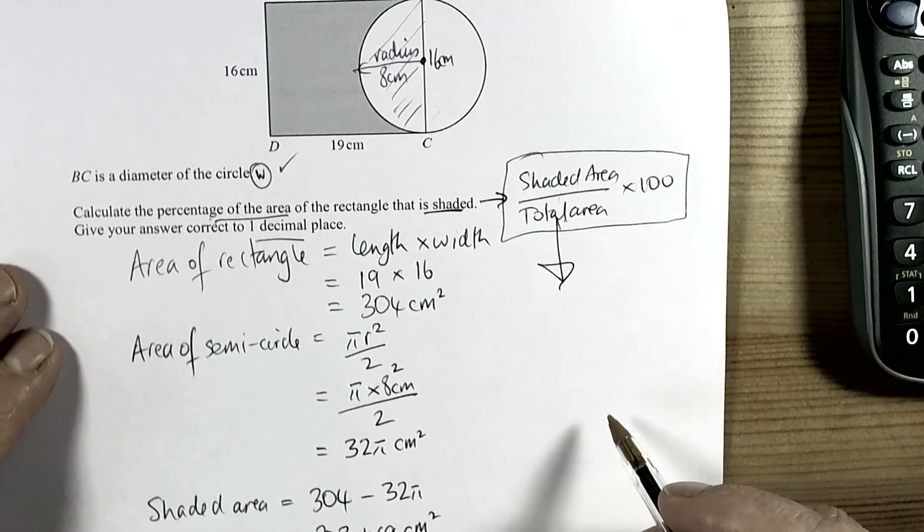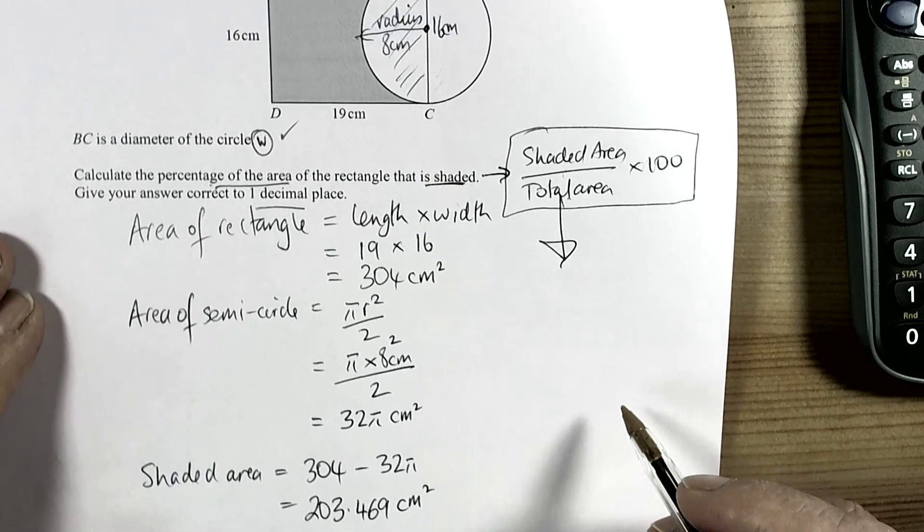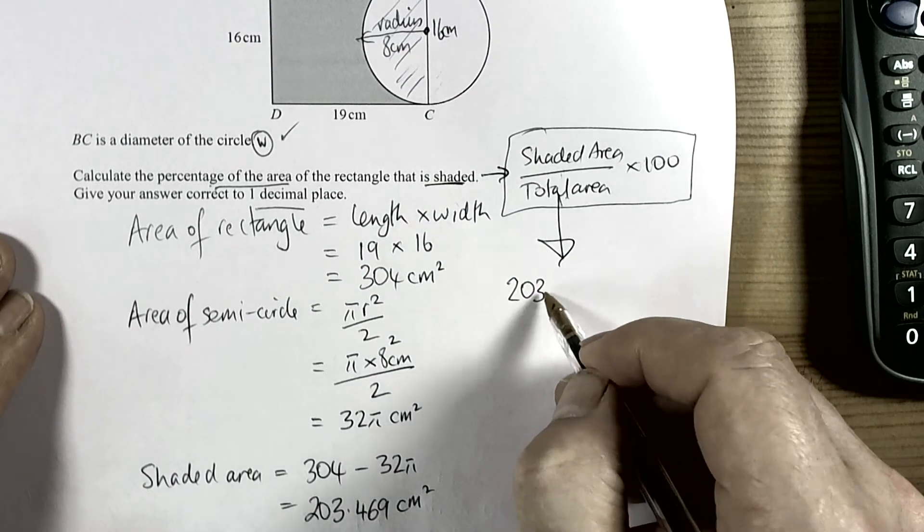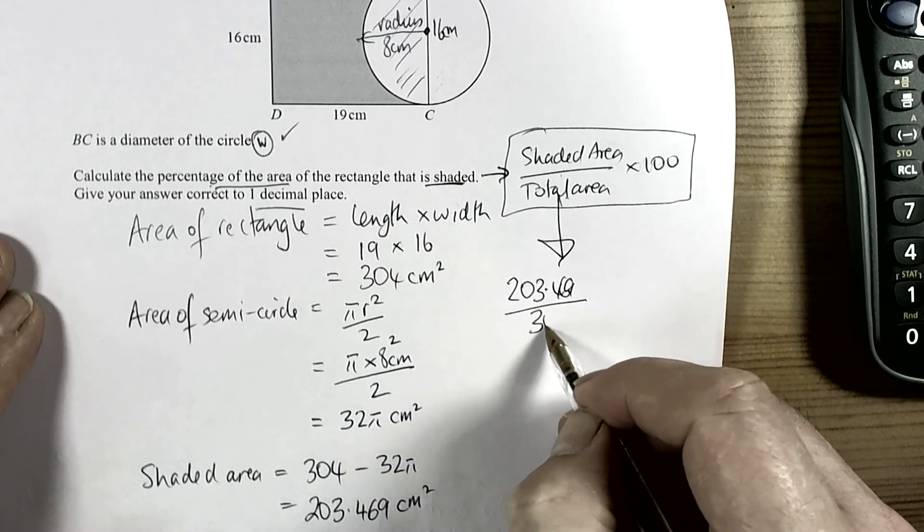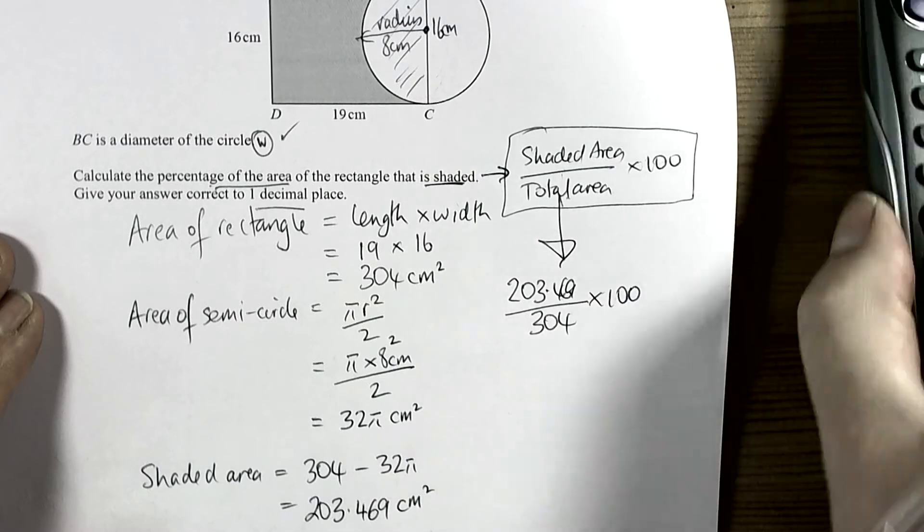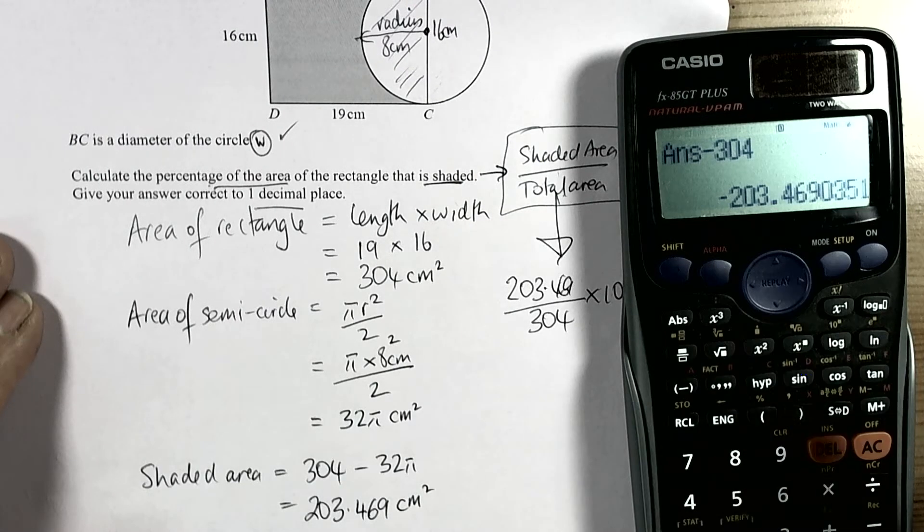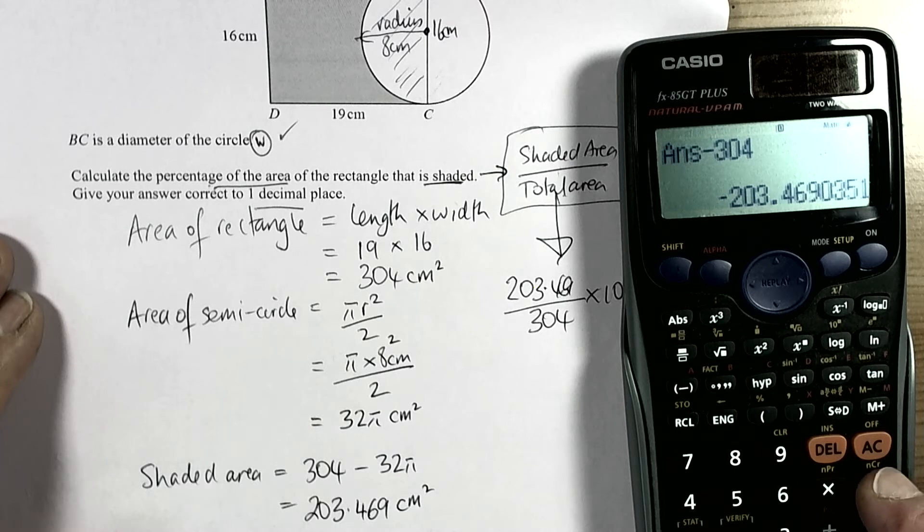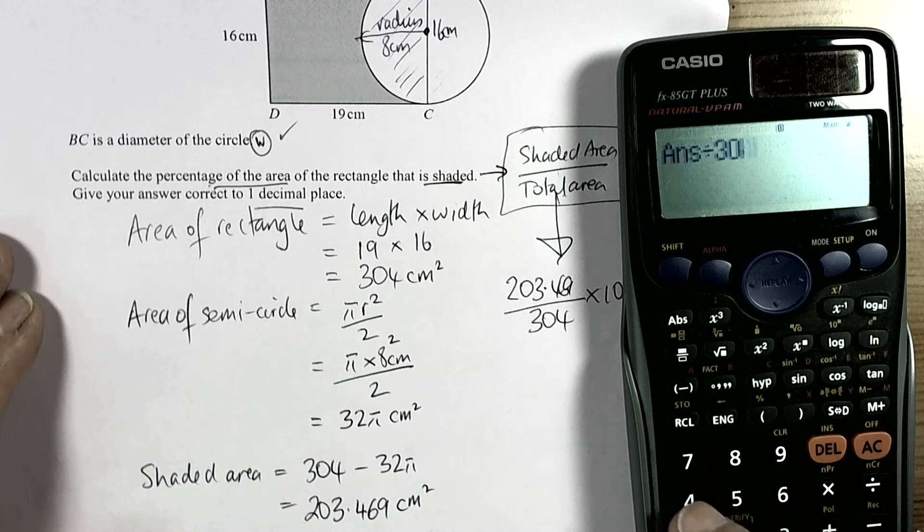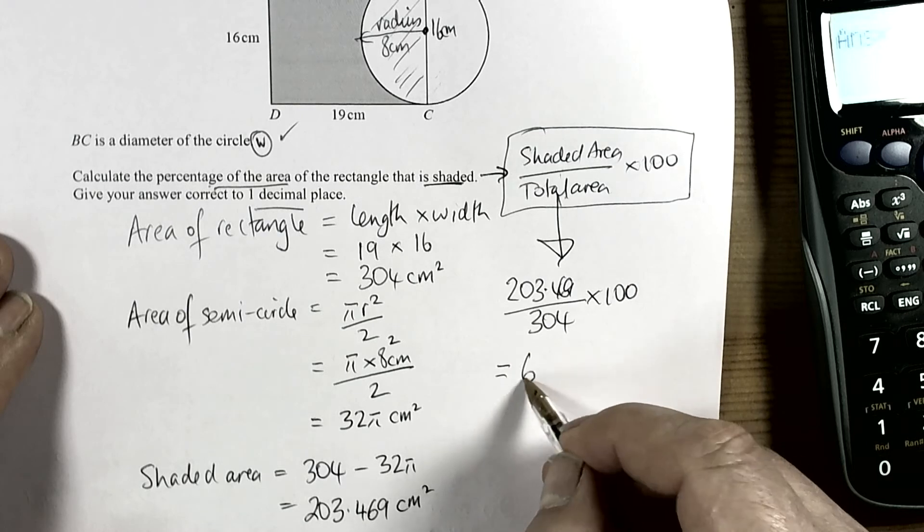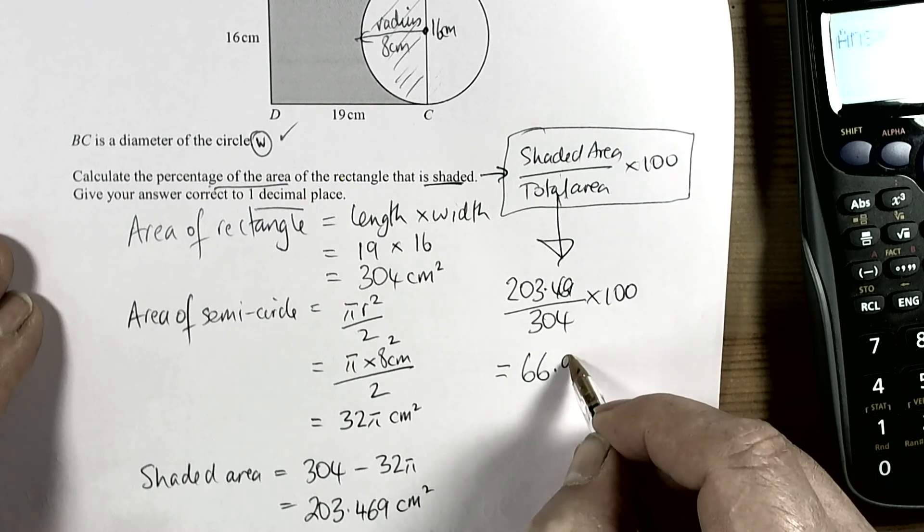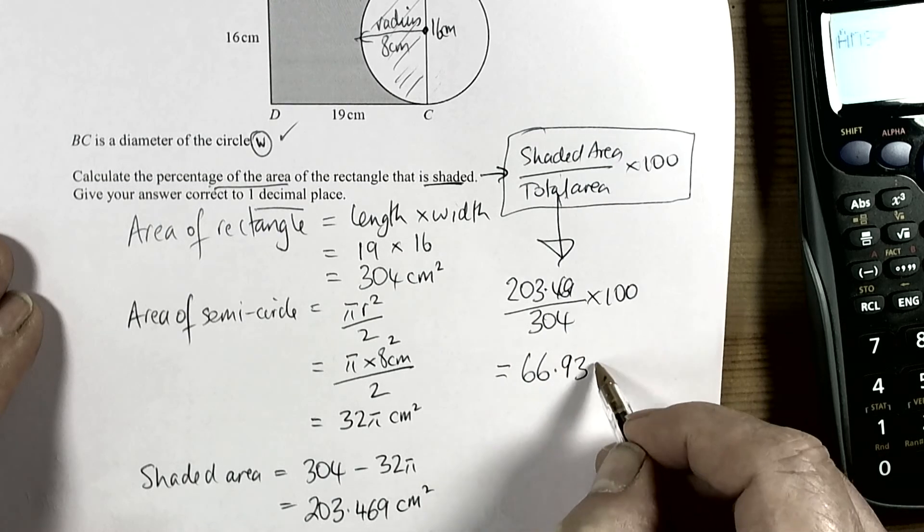So from that then we can see that we'd have to do 203.469 over the total area times 100. So I left that in the calculator and ignore the negative sign because it's not important, everything was positive. So we're going to divide that by 304 equals, and then we're going to times by 100 equals. So again ignore the negative sign because that was just part of the way I calculated that. 66.9%.